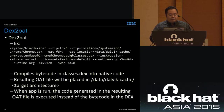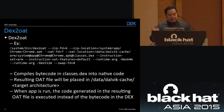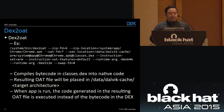The dex2oat tool receives several parameters, including the location of the file to compile and the output location, which is normally in the data/dalvik-cache directory under a folder named for the target architecture — 'arm' for ARM, 'x86' for x86. After ahead-of-time compilation, whenever your app runs, the code generated in the resulting OAT file is executed instead of the bytecode in your DEX file.